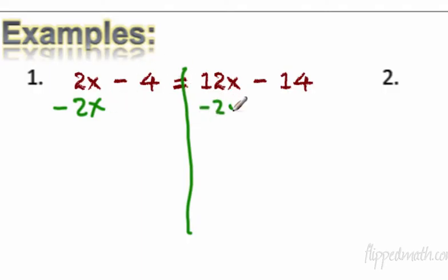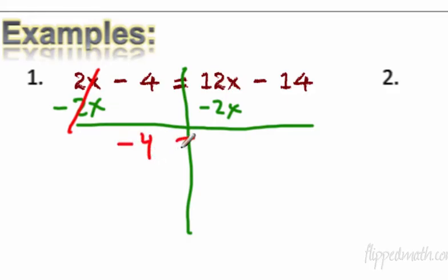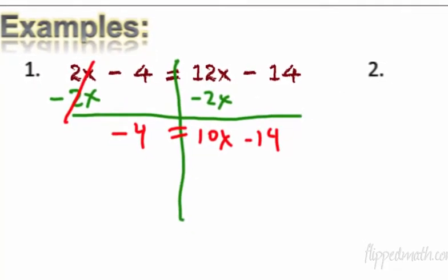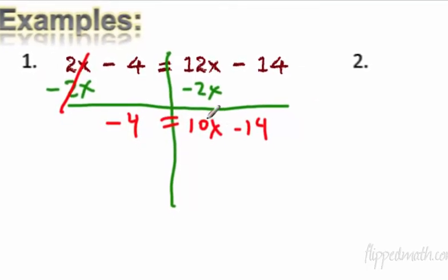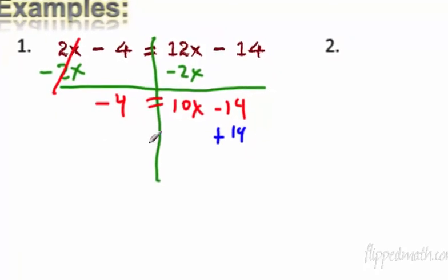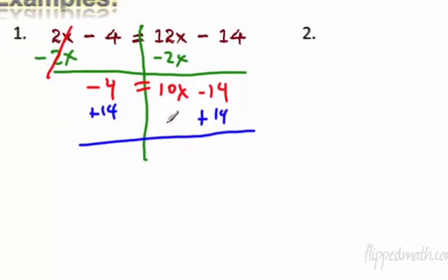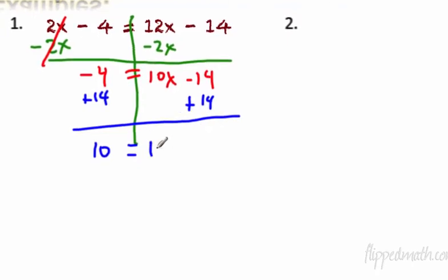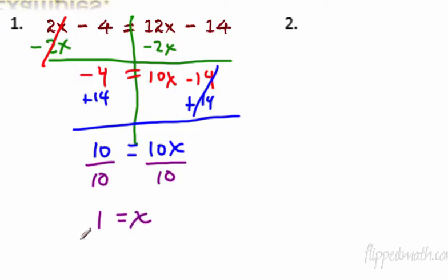We have one on the left, one on the right. Draw the big line and read it like a book. 2x minus 2x cancels. The negative 4 comes down — don't forget the negative. We have 12x minus 2x, that's 10x, and negative 14 comes down. Now this is a two-step equation. We add 14 to each side. Negative 4 plus 14 is 10, equals 10x. Negative 14 plus 14 cancels. Last step: 10 times x — the opposite of multiply is divide — so divide both sides by 10. We get x equals 1.